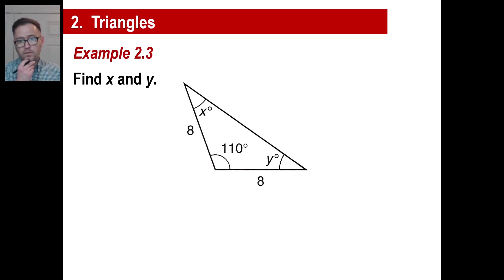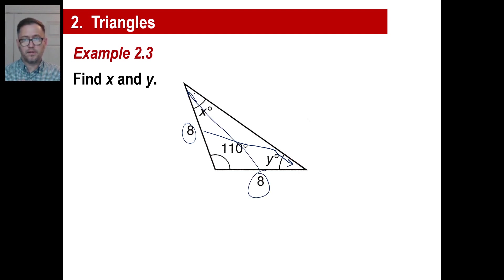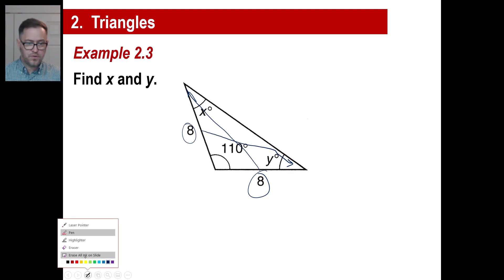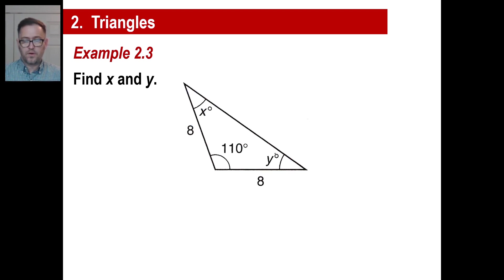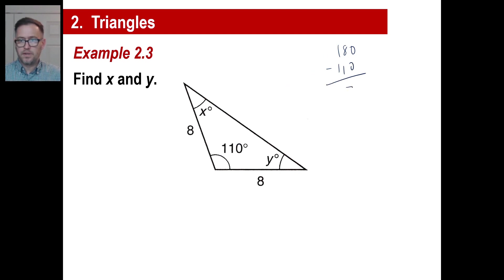This one has a side length of 8. The angle across from a side determines its length. Since both sides are 8, the angles across from them are equal. We have 180 degrees total — subtracting the 110 degree angle leaves 70 degrees. Since both remaining angles are the same, divide 70 by 2, so X and Y are both 35 degrees.